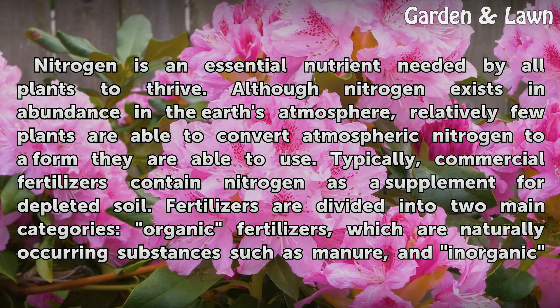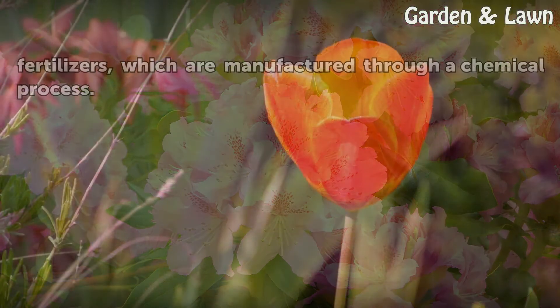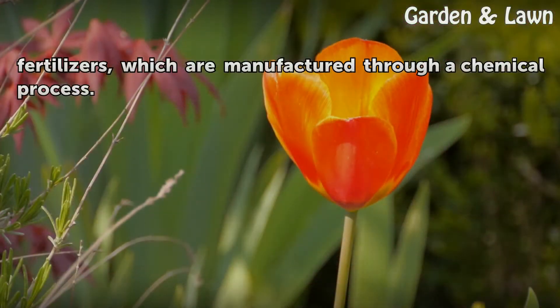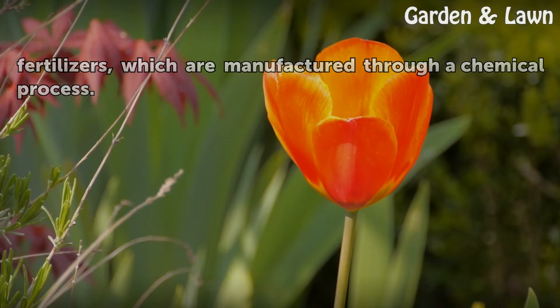Fertilizers are divided into two main categories: organic fertilizers, which are naturally occurring substances such as manure, and inorganic fertilizers, which are manufactured through a chemical process.